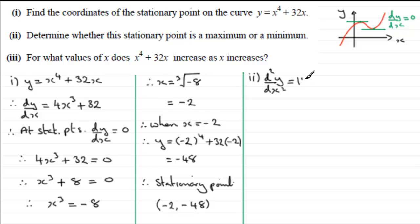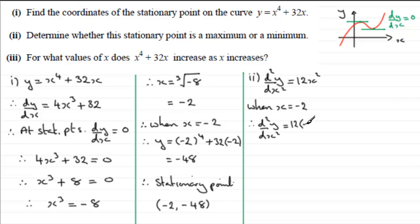Using the second differential method: differentiating dy/dx gives d²y/dx² equals 12x squared. When x equals minus 2, d²y/dx² equals 12 times minus 2 squared equals 12 times 4 equals 48. This is positive, greater than zero, so we have a minimum stationary point.